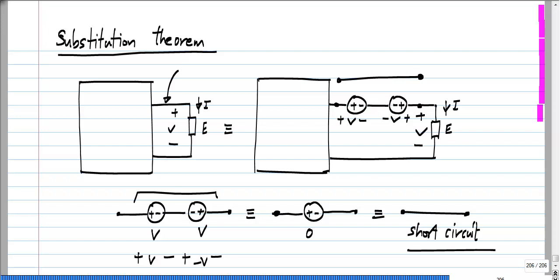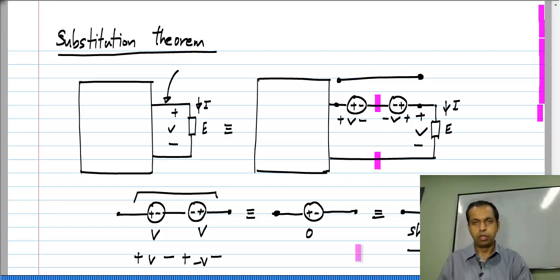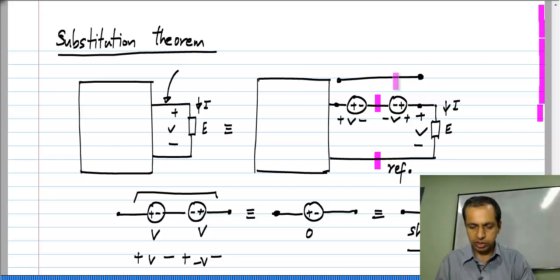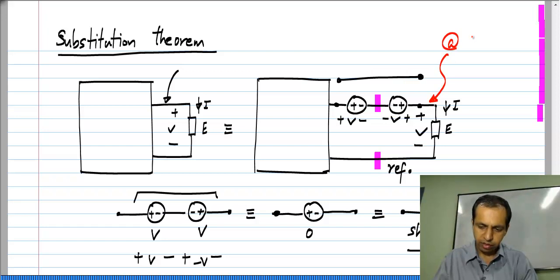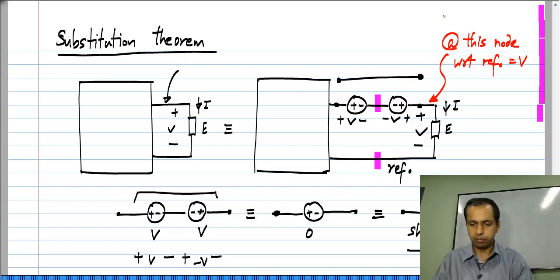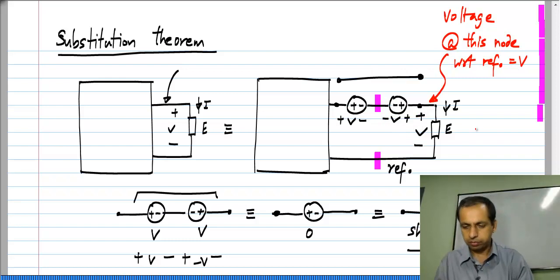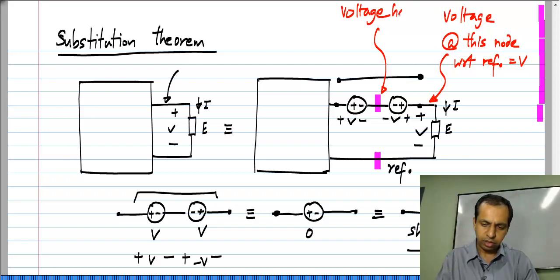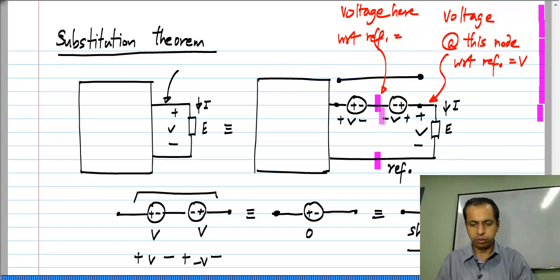Now let us consider the voltages at this node and that node. We can take any reference we want, but for simplicity let me take this node itself as the reference. With respect to this reference, the voltage here — shown in red — is V at this node. That is the voltage because from here to there you have a potential rise of V, and from there to there you have a potential fall of V. So the voltage here with respect to the reference node equals rise of V minus V due to the fall, equals 0.